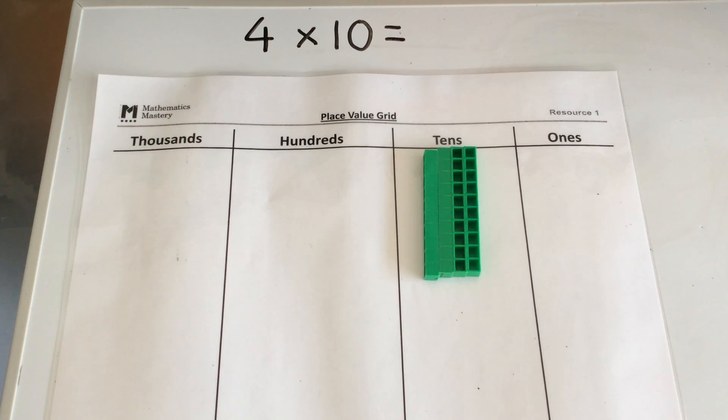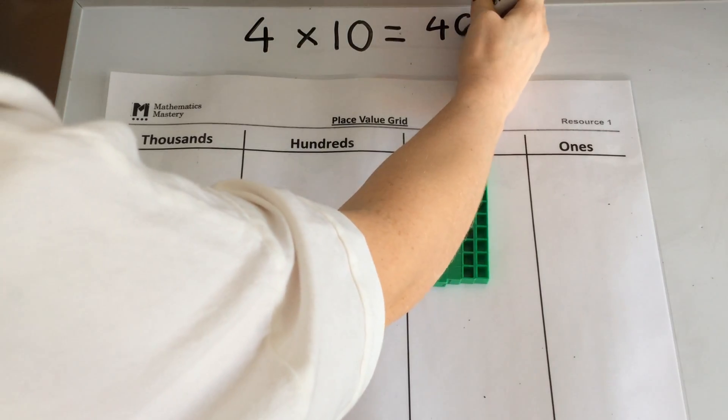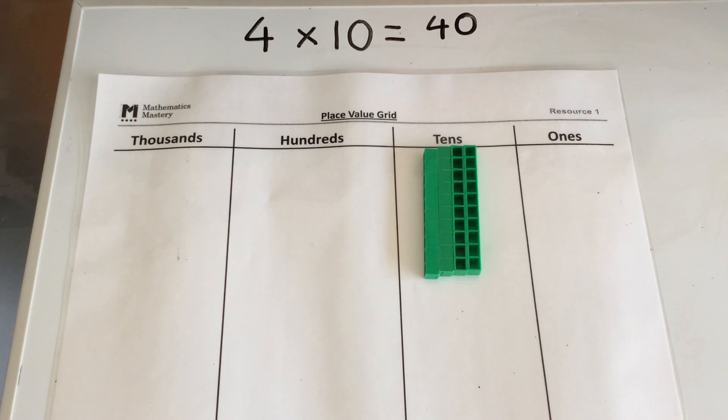Therefore 4 times 10 is equal to 40. Or 10 times greater than 4 is equal to 40.